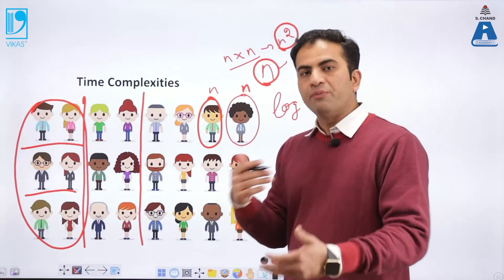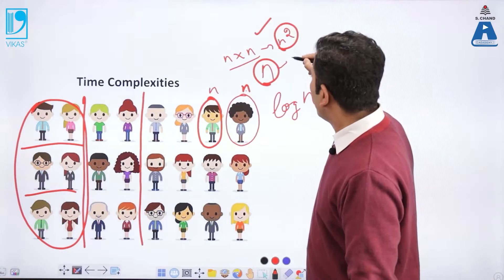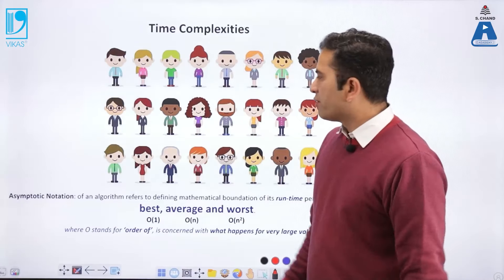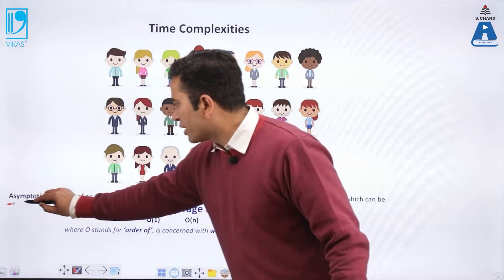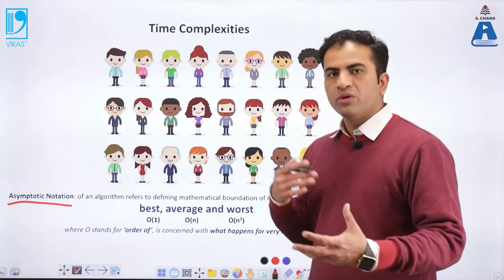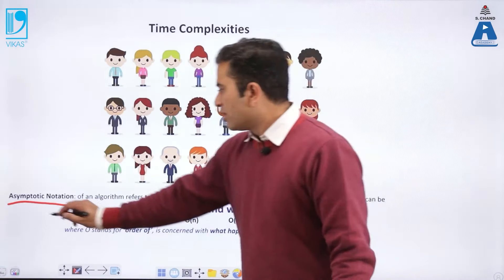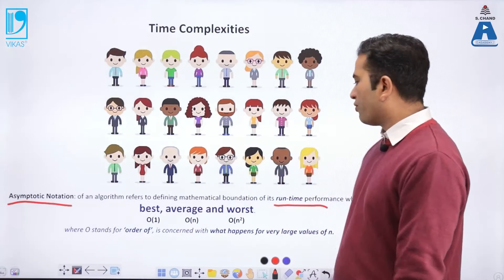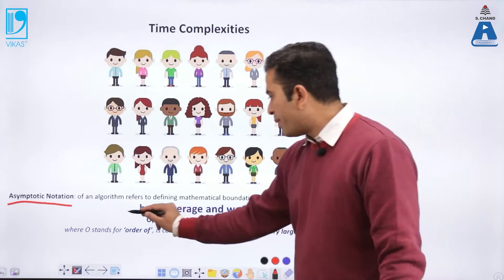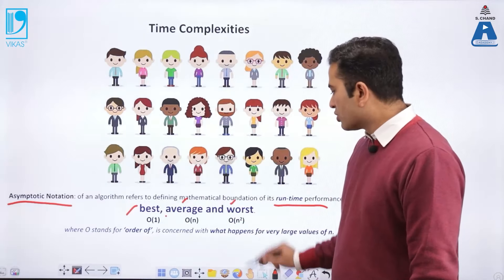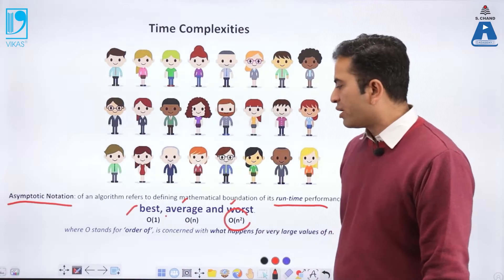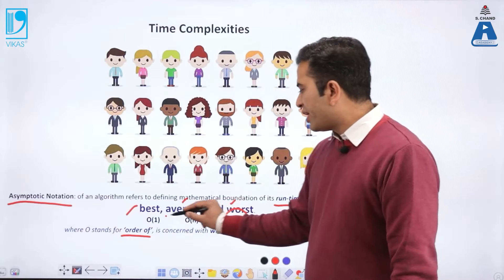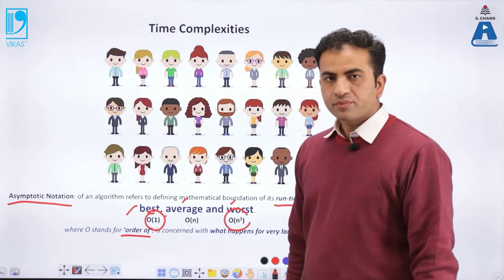Arranging all these in terms of computation: we have n², n, and log n. In computer science, the notation used is called asymptotic notation. Asymptotic notation refers to defining the mathematical foundation of an algorithm's runtime performance. There are three types of runtime performance: best, average, and worst. O(n²) is the worst order, O(n) is the average, and O(1) is the best.